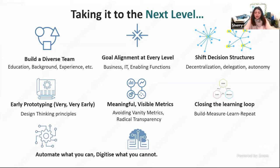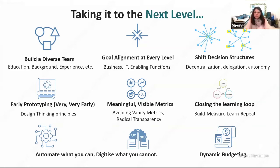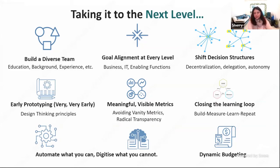Automate what you can, digitize what you cannot. And then there is dynamic budgeting — something many organizations get wrong. Even though we've accepted that customers may want different things and the market may change, we often fund initiatives the traditional way: deciding annual budgets once a year, with allocations that remain static regardless of what happens. If we've accepted in product delivery that we respond to customer requirements, then dynamic budgeting must also account for changing market conditions, allocating resources to the best-performing products rather than continuing to fund initiatives that aren't delivering.